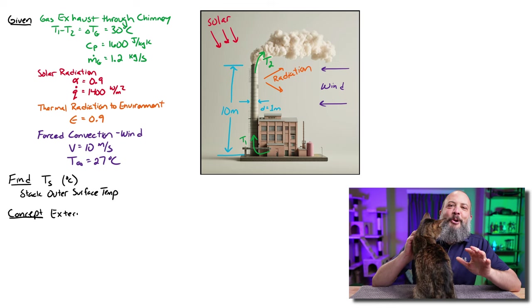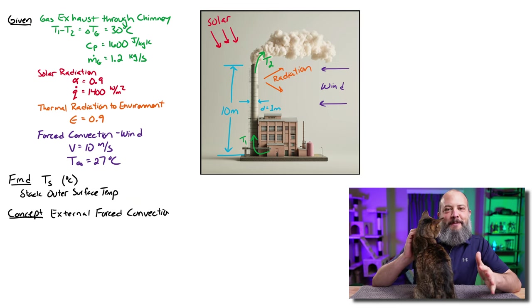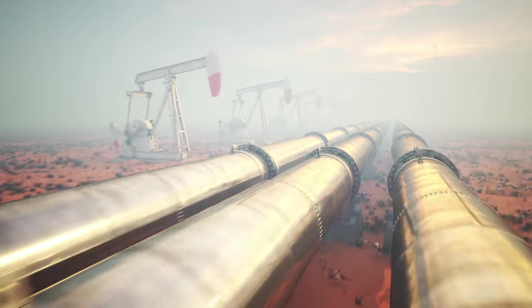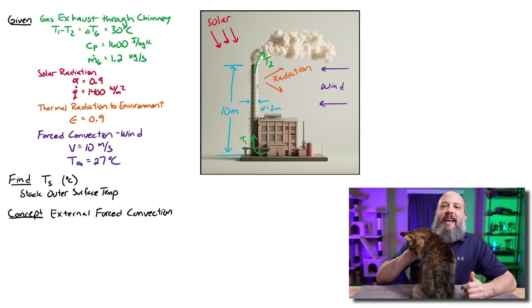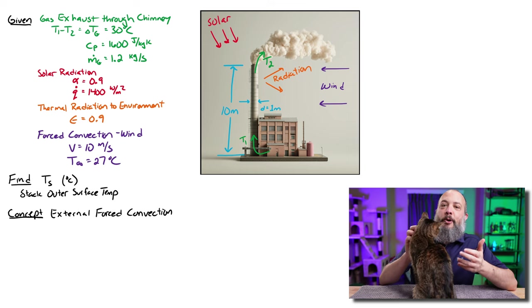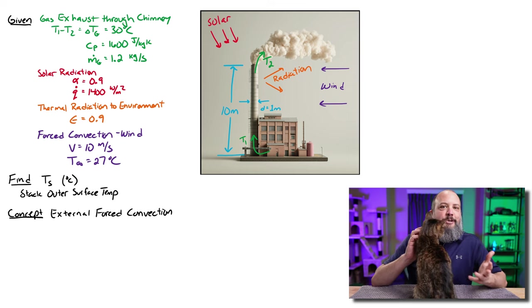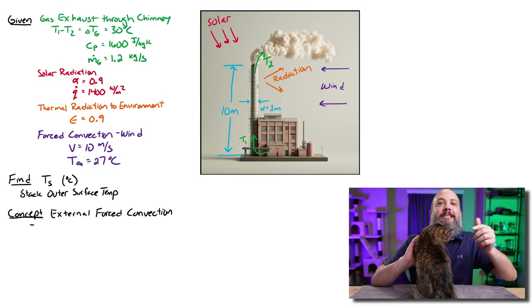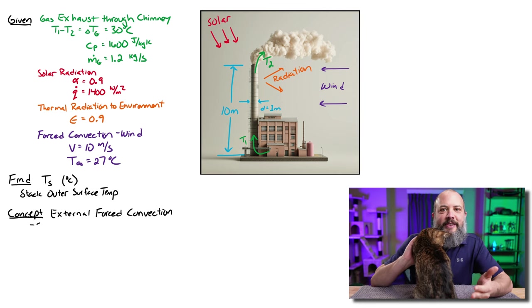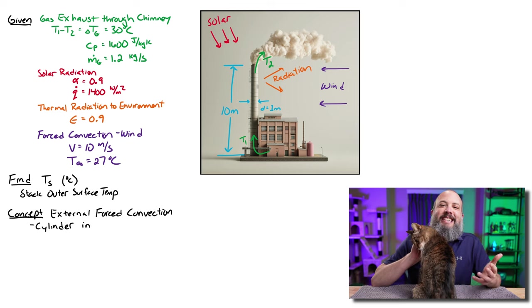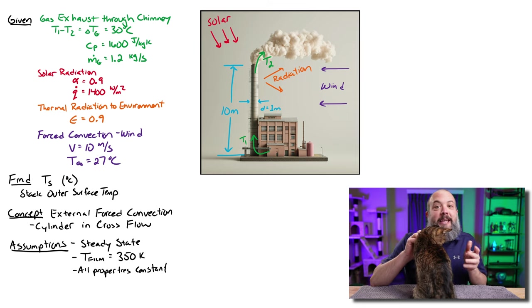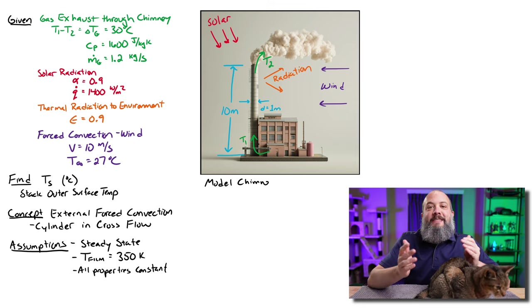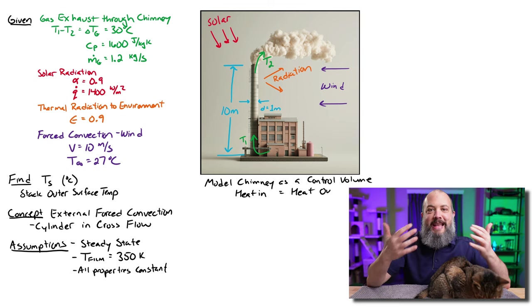So this problem falls under the category of external forced convection. Internal convection would be flow through a pipe. External convection is when the flow is outside the object. And forced convection as opposed to natural convection because forced means that the fluid is actually moving. Natural convection, there would not be actual flow, only motion created by hot air rising and cold air sinking. The shape for this problem is a cylinder in cross flow, meaning air is flowing perpendicular to the cylinder. External forced convection with cross flow over cylinder is the main aspect of this problem.